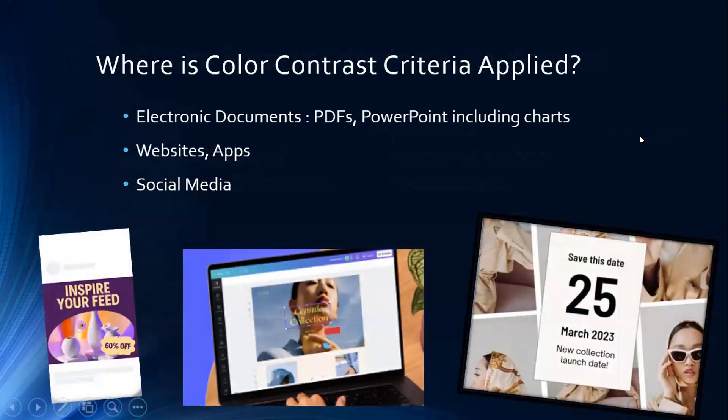Where is color contrast criteria applied? Essentially anything considered ICT or electronic — accessible documents and online things. That includes PDFs placed online or sent through email, PowerPoints with charts full of text against colored backgrounds, websites, apps, and social media.